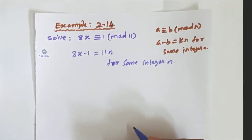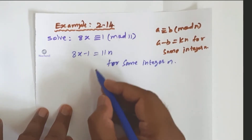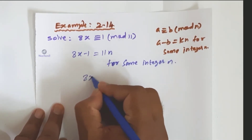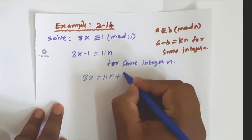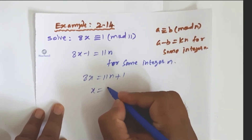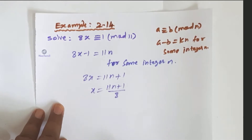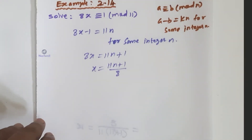Now further I simplify: 8x equals 11n plus 1, and therefore x equals (11n + 1) divided by 8. We need to find integer values of n such that 11n plus 1 is divisible by 8.